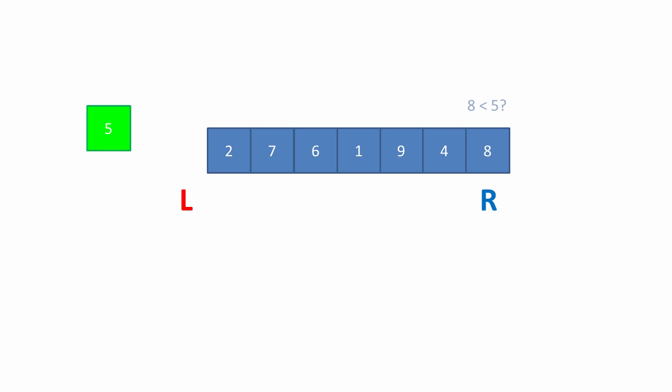And now we ask the question: is the value at the right pointer less than the pivot value? In this case, is eight less than five? Because the answer is no, we can leave the eight where it is and simply advance the right-hand pointer.